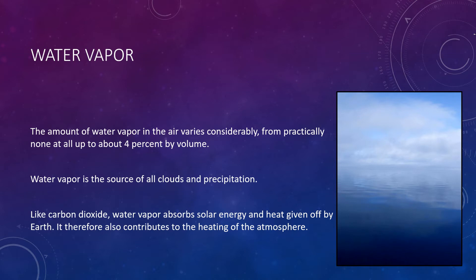However, water vapor has other roles. Like carbon dioxide, water vapor absorbs heat given off by the earth and some solar energy. It is therefore important when we examine the heating of our atmosphere. When water changes from one state to another, it absorbs or releases heat. This energy is termed latent heat, which means hidden heat. As we shall see later, water vapor in the atmosphere transports this latent heat from one region to another and it is the energy source that helps drive many storms.